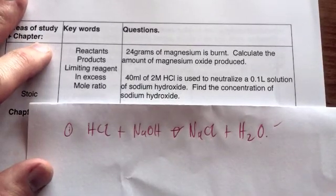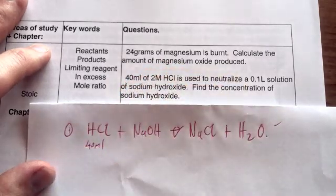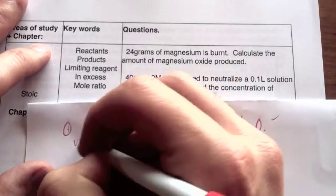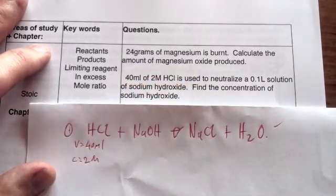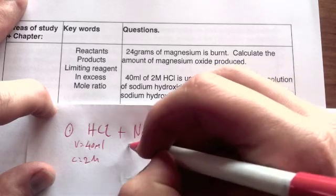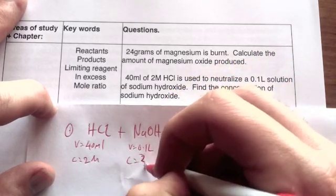You then need to work out what you have. So we're going to write down that we have 40 ml of HCl and it's 2 molar. So that's V equals 40 ml and C equals 2 molar. We also have 0.1 litres of sodium hydroxide. And we want to find what concentration this is.